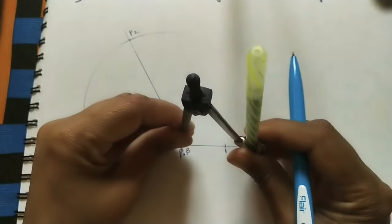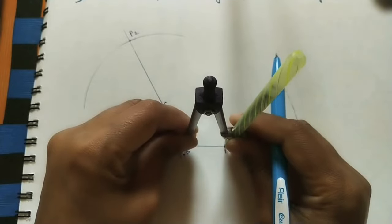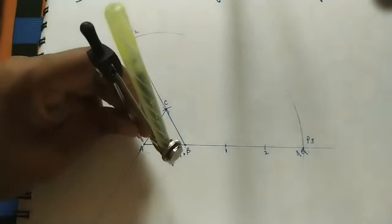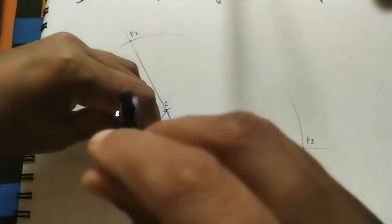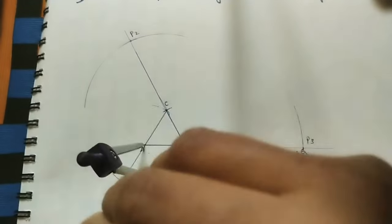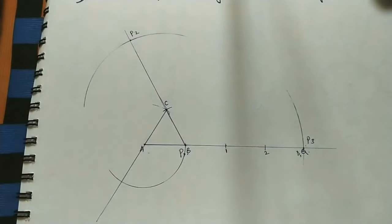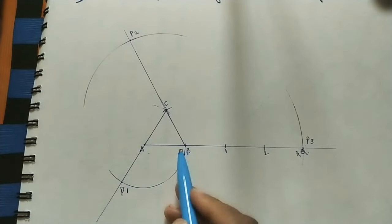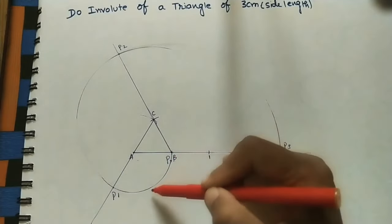After P2, take P1 length using the compass. Mark on the third line with A as center, do an arc and join with P. Take the intersection point as P1. Join all the P points.